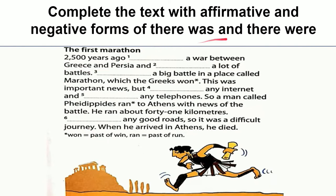Complete the text with affirmative and negative forms of 'there was' and 'there were'. You can complete this exercise in the Google Form link provided below in the description box. After you have completed, make sure you turn it in on Google Classroom.